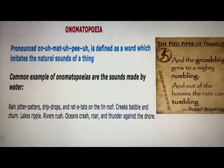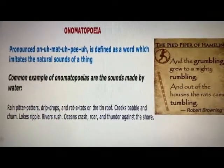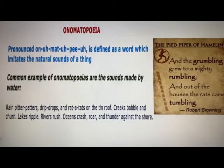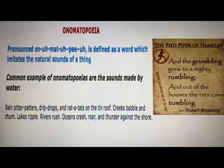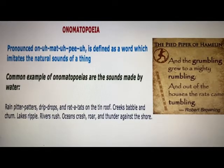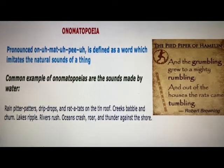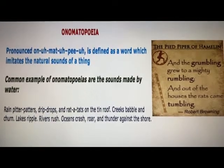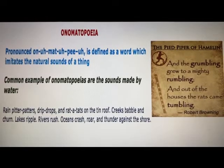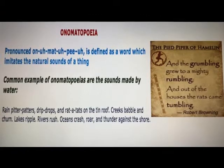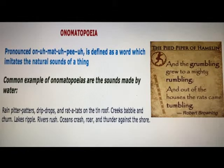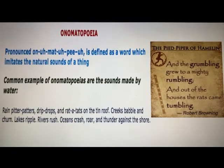The next poetic device is onomatopoeia. It is defined as a word which imitates the natural sounds of a thing. I suppose it is the easiest poetic device — whatever sounds themselves represent some object or animal come under this device. For example: 'And the grumbling grew to a mighty rumbling, and out of the houses the rats came tumbling.'